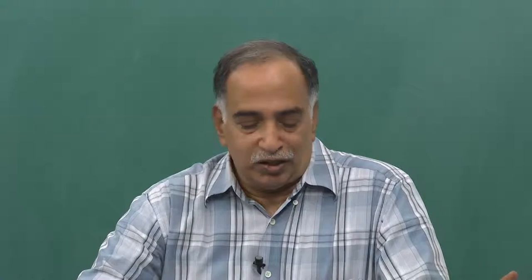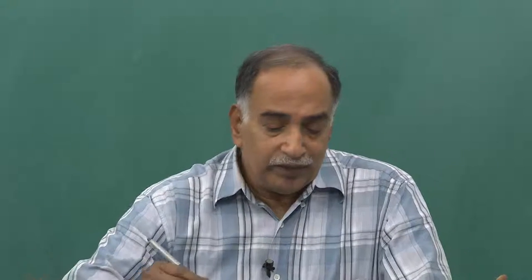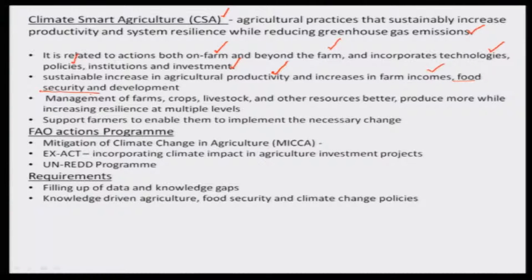That is the goal of climate smart agriculture. Now if we do this sustainable agriculture, one thing is that for the human race, agriculture productivity increases and food security is assured. For the farmers, their income goes on increasing. For the food security managers, there is a positive note and they can relax a bit for that particular area.